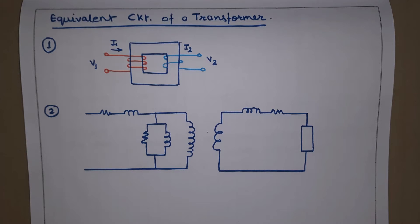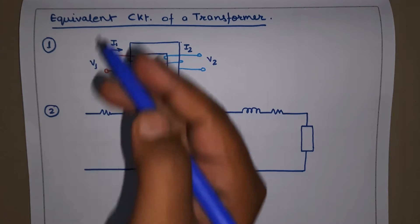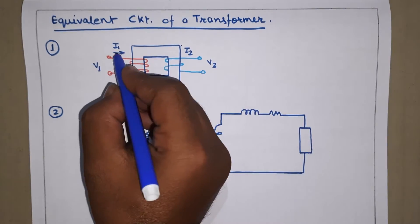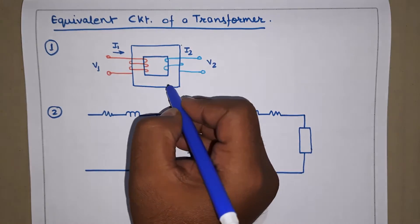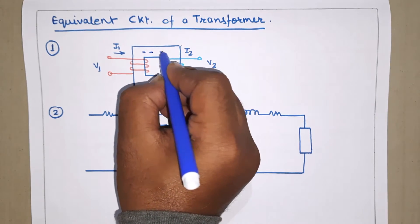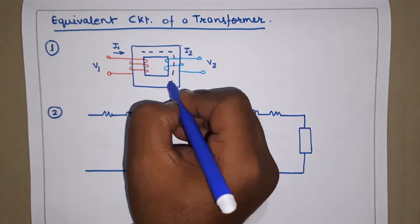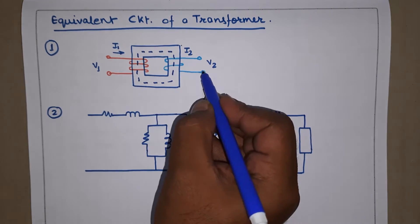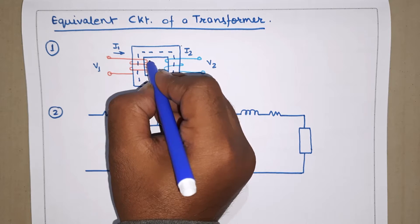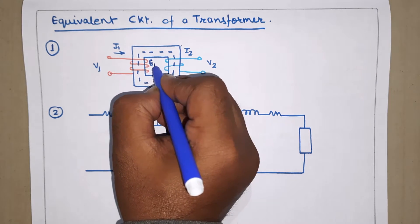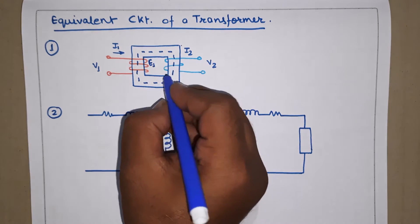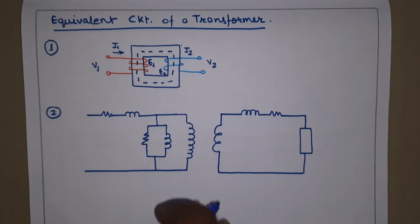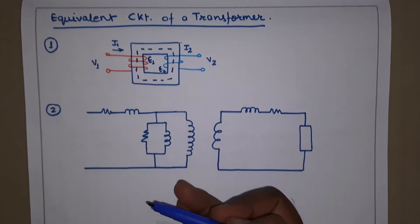The equivalent circuit has input voltage v1 and output voltage v2, with currents i1 and i2. The flux moves through the iron core and links both windings — the red one is the primary winding, the blue one is the secondary winding. The induced EMF of the primary is written as e1, and the induced EMF of the secondary is written as e2.